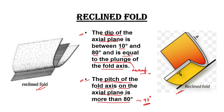Because the pitch of the fold axis on the axial plane is more than 80 degrees and around 90 degrees, that is why the dip of the axial plane and the plunge of the fold axis are the same. This is very important, and this rule is applicable for any line and a plane. This fold axis is a line and the axial plane is a plane. This relation is valid for any line and any planar feature — for example, slicken sides on a fault plane. If the pitch of the slicken sides is 90 degrees, then the dip of the fault plane and the plunge of the slicken sides will be the same.